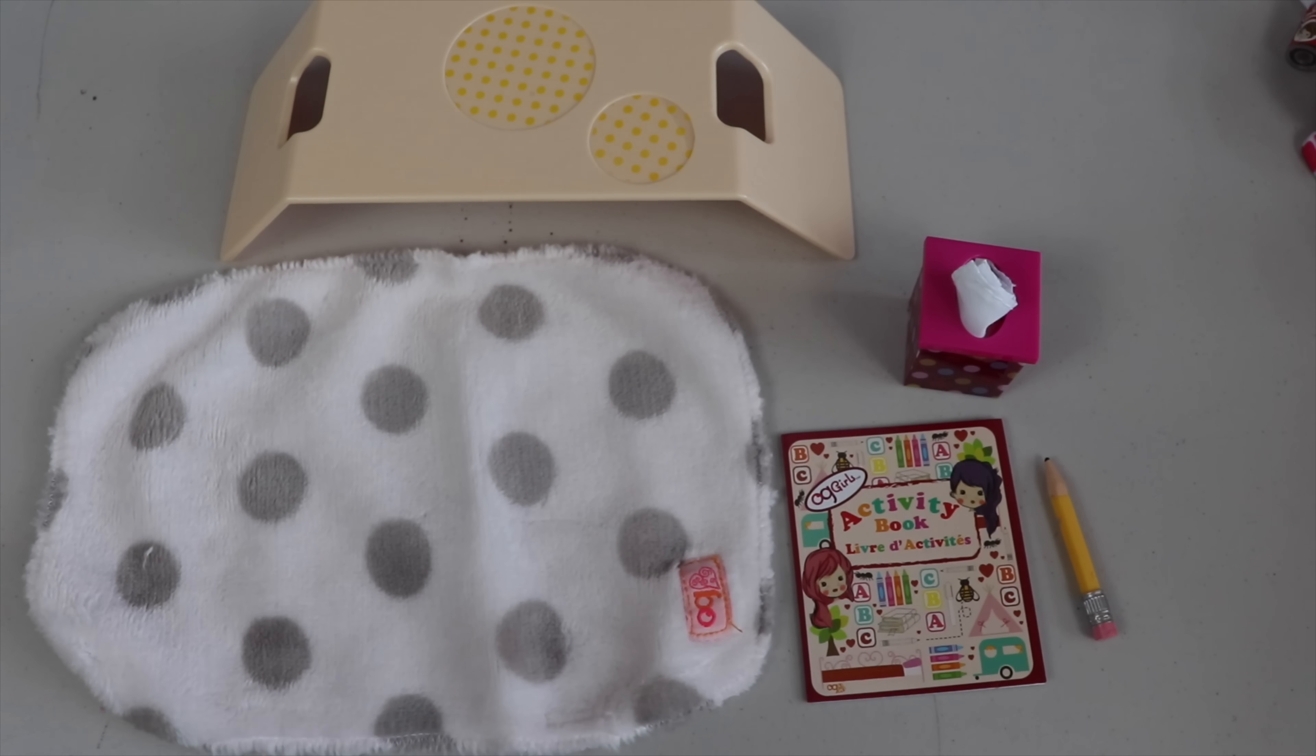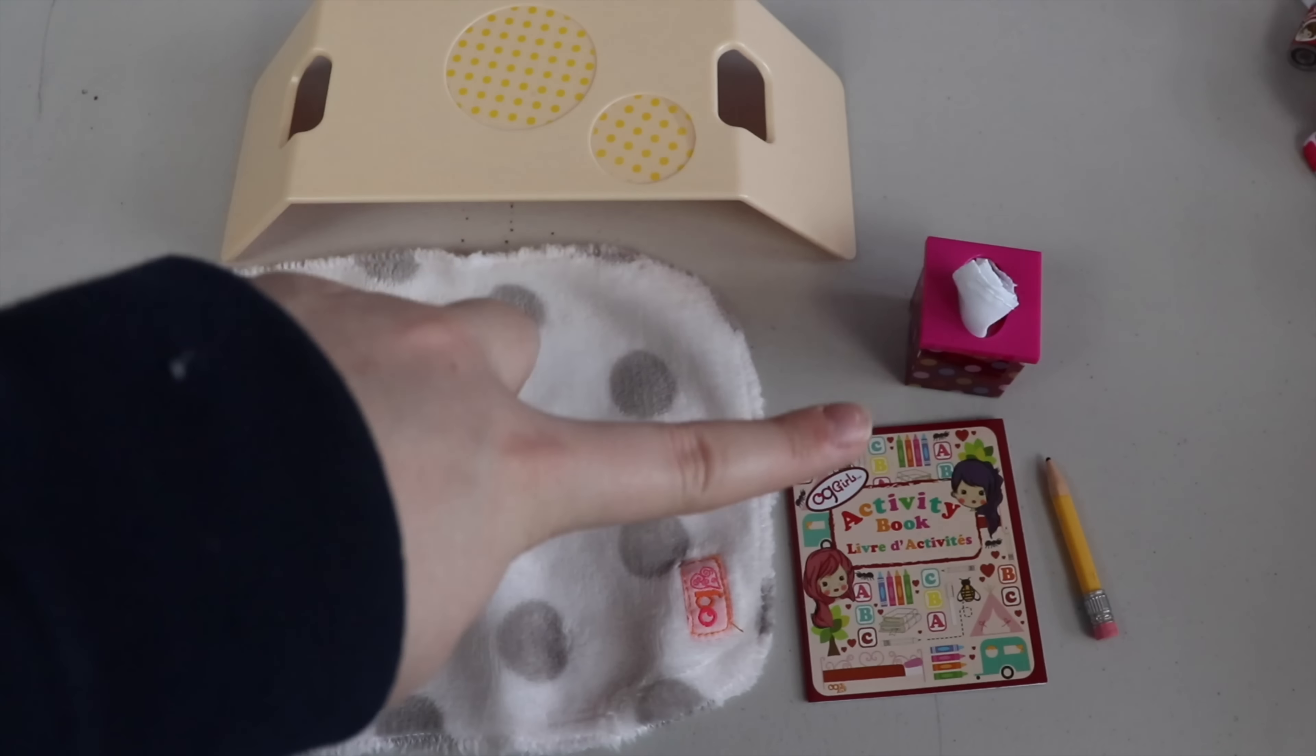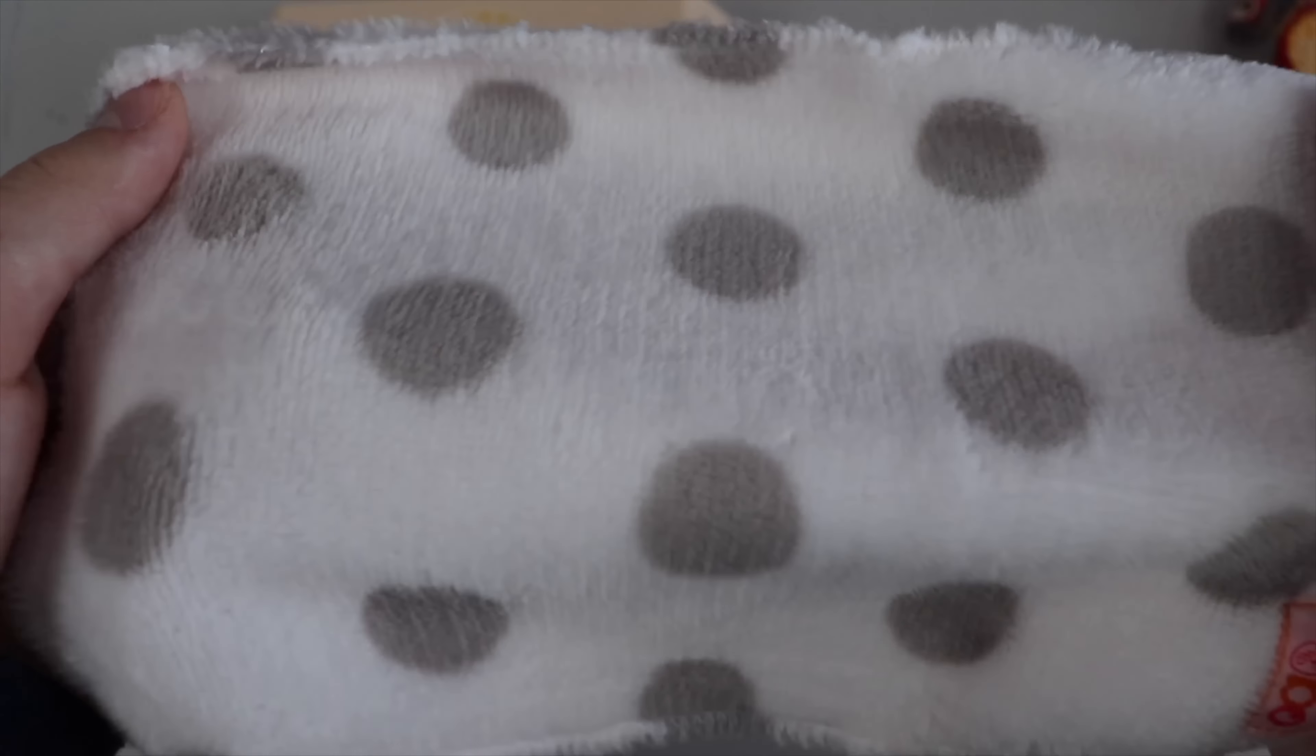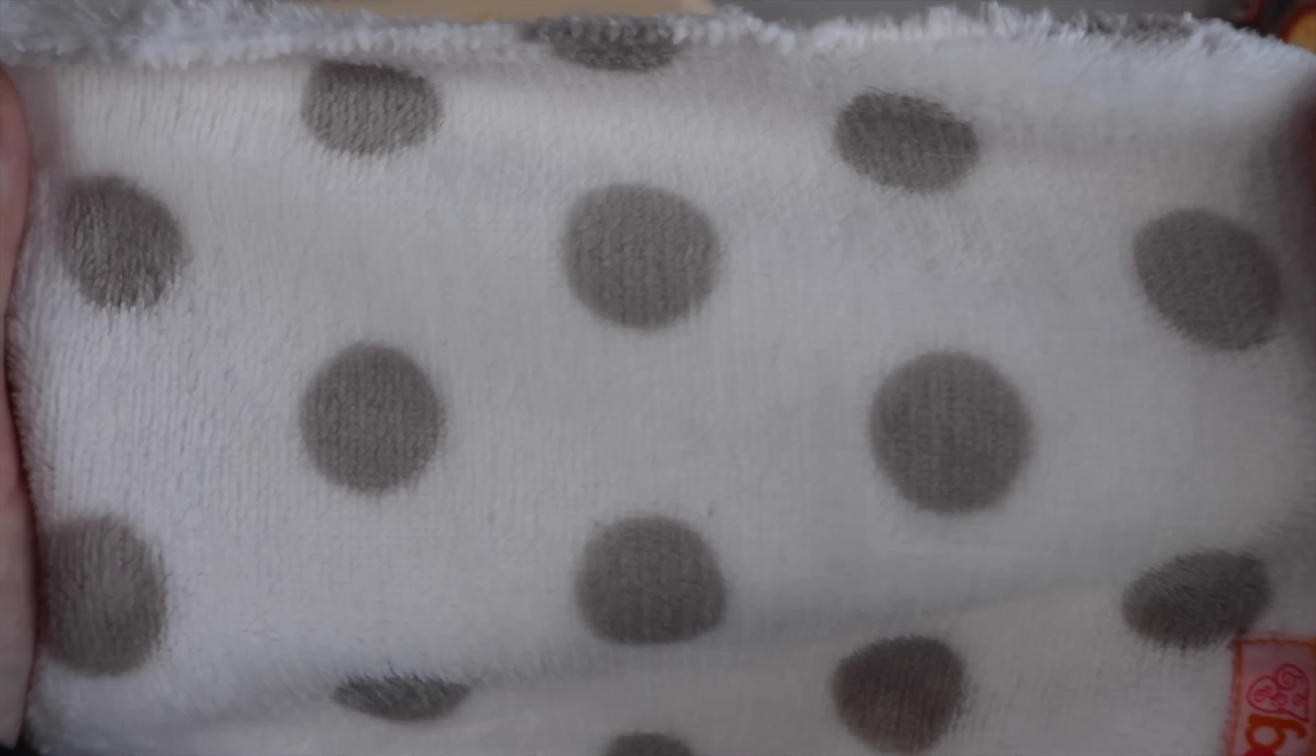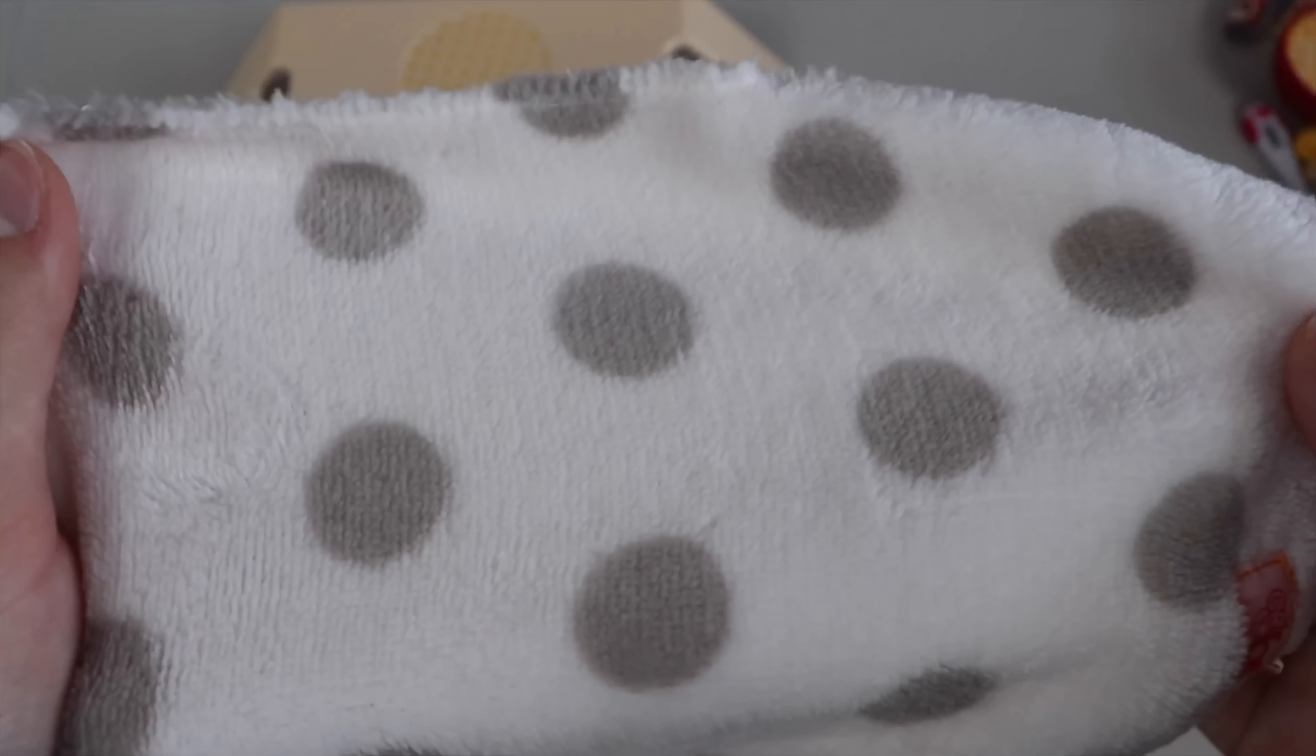So the first couple of things that are included in this set are a blanket, a food bed tray, a box of tissues, an activity book, and one pencil. The blanket is white with gray polka dots. It is super fuzzy and cozy, and I think it's made of such a great material.